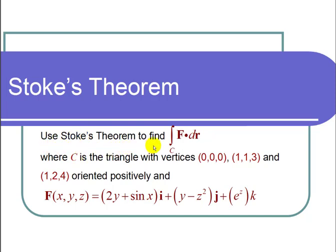use Stokes Theorem to find the line integral over a curve C of f dot dr where C is the triangle with vertices (0,0,0), (1,1,3), and (1,2,4) oriented positively